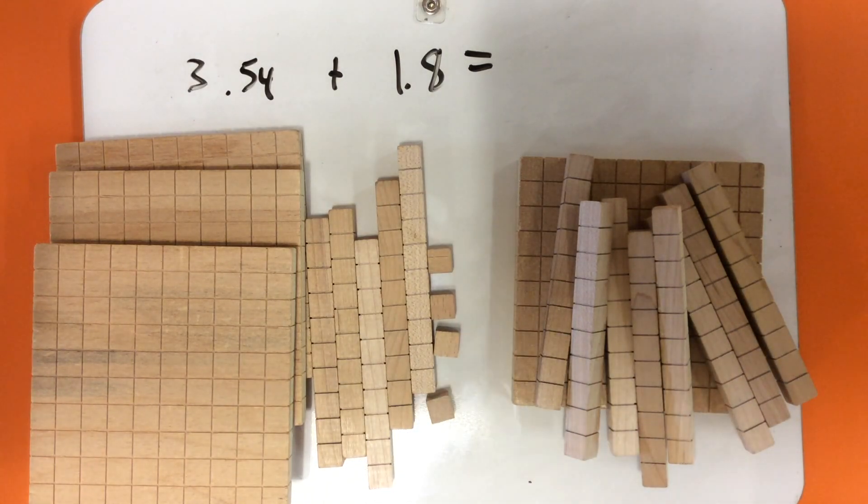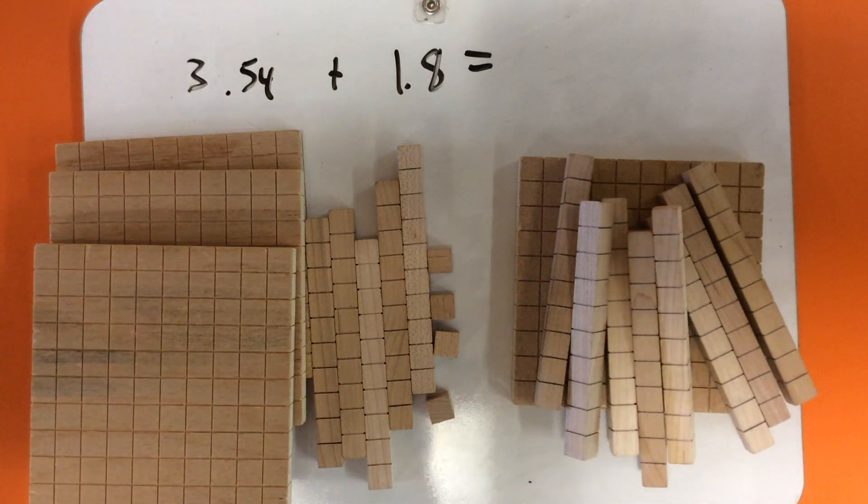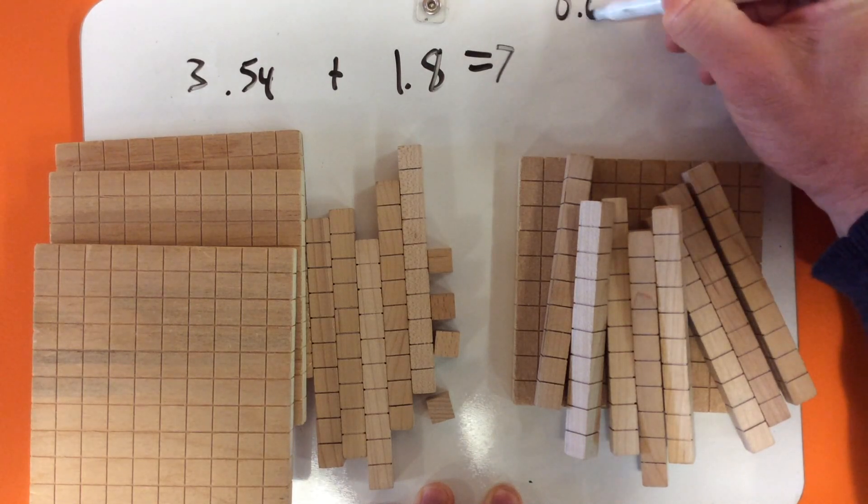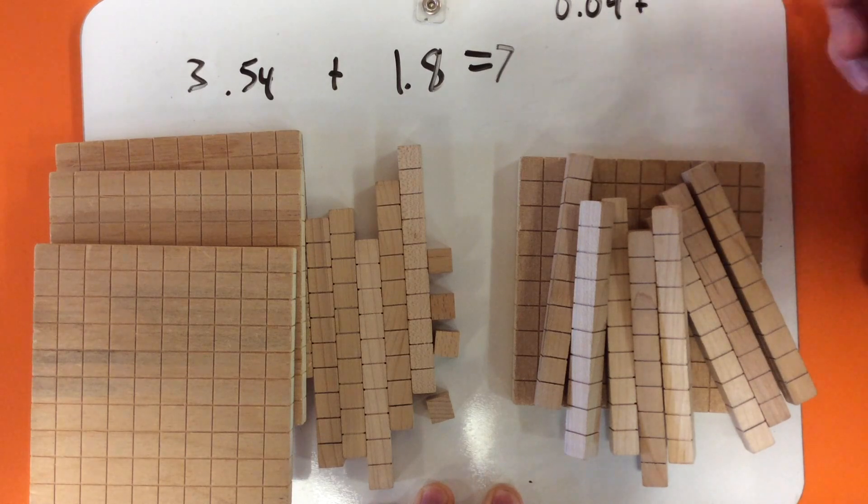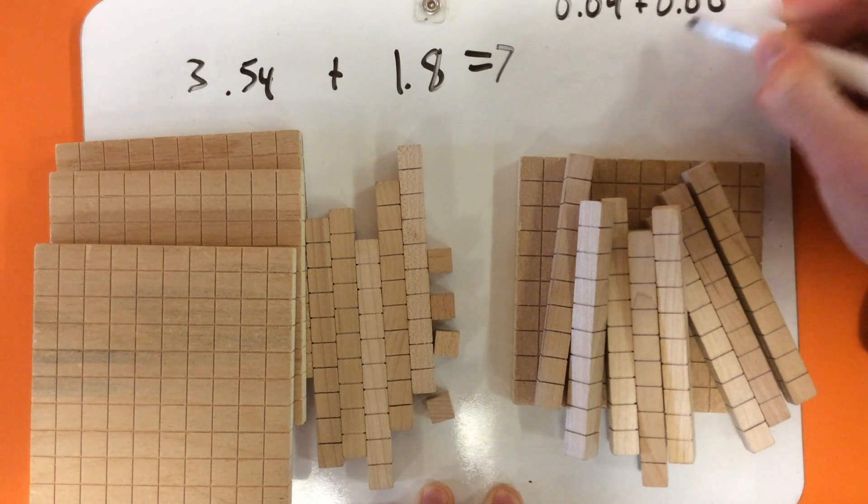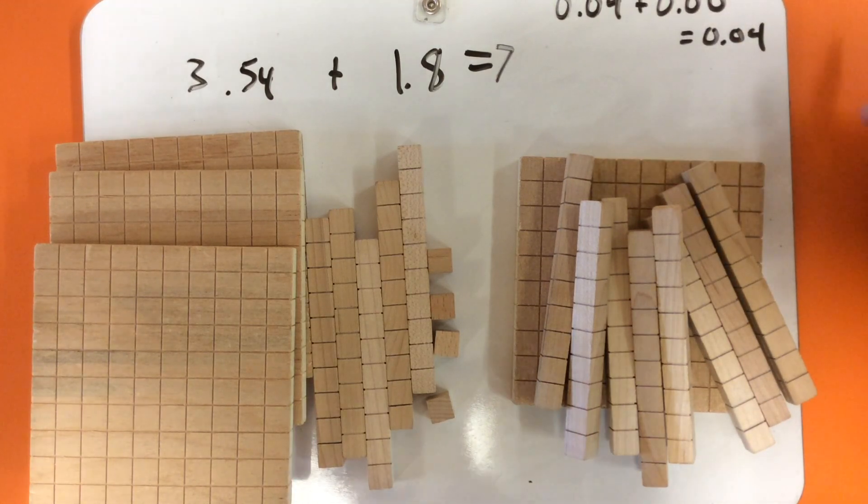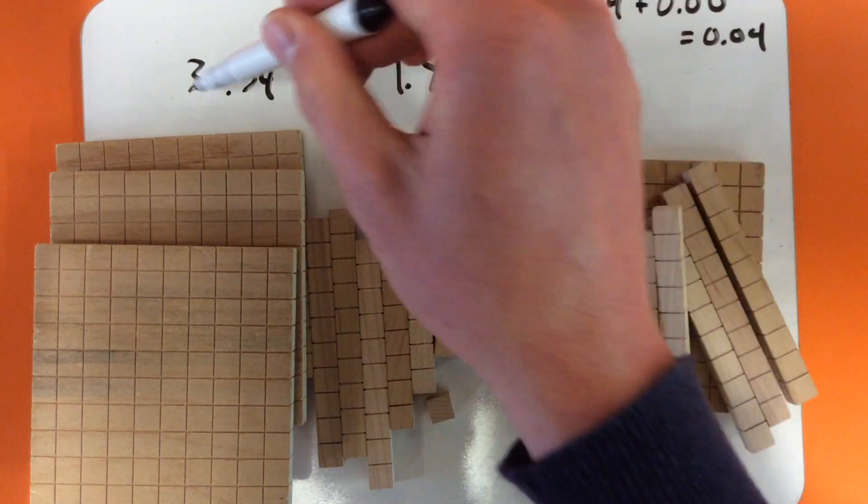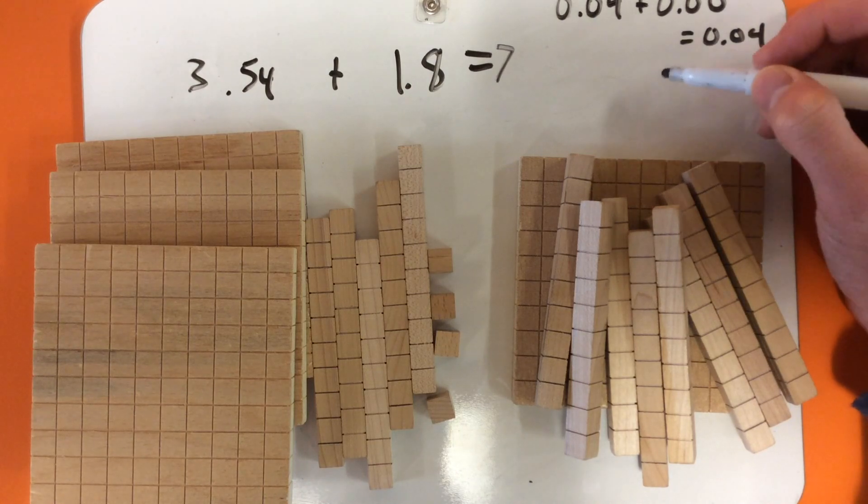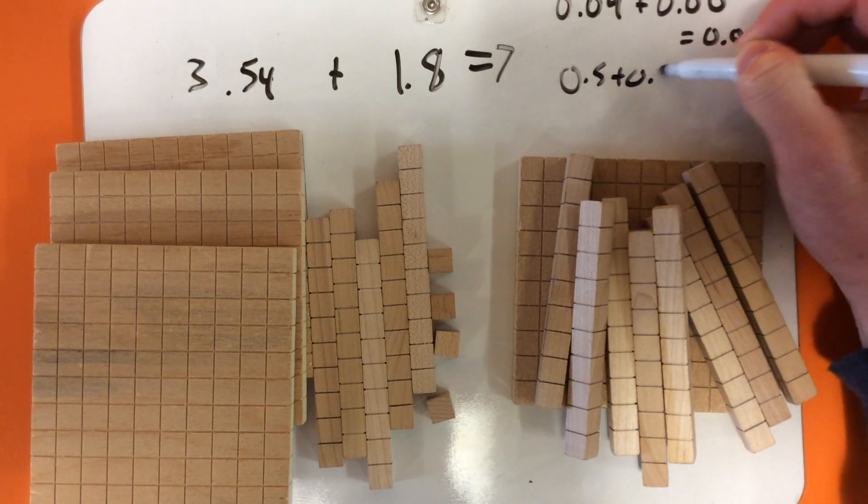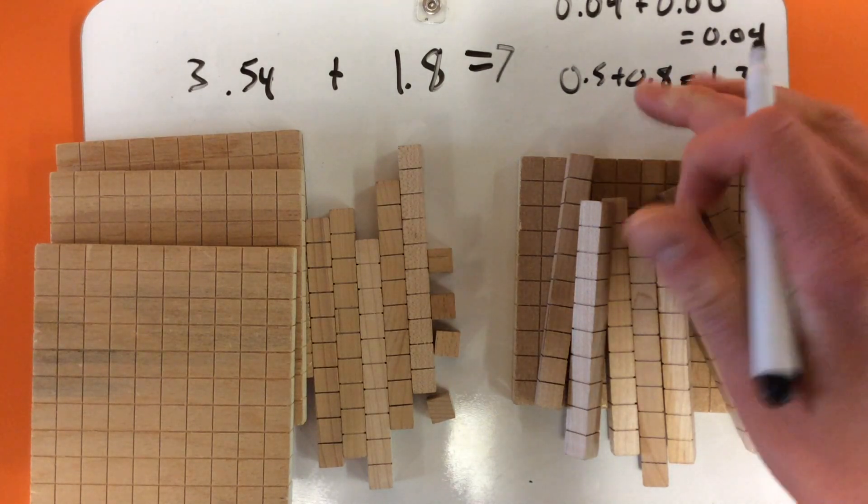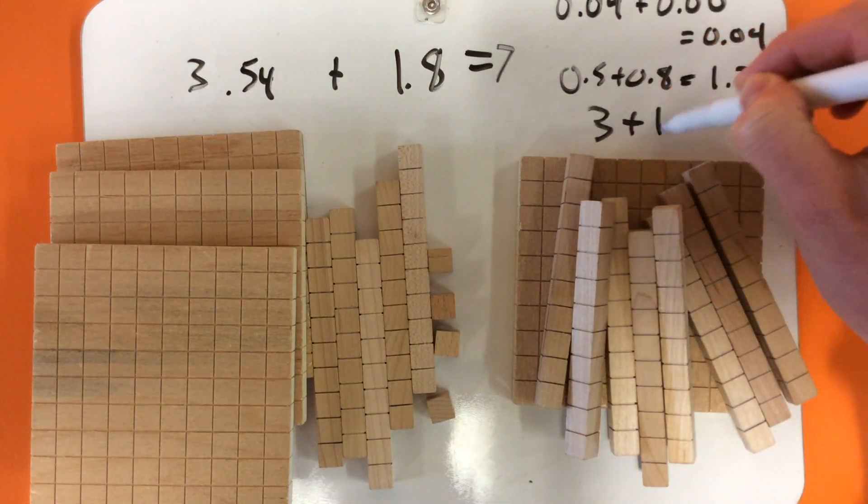First, we're going to add up the smallest number, the hundredths. So 0.04 plus 0 hundredths equals 0.04. The next thing is we're going to add up the tenths: 5 tenths and 8 tenths. And you can do that in your head. It's 13 tenths. So 0.5 plus 0.8 equals 1.3. The next thing we will do is add the 3 and the 1: 3 plus 1 equals 4.